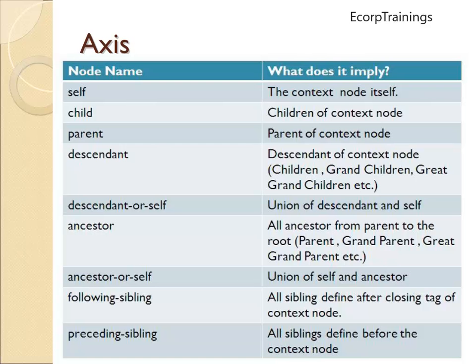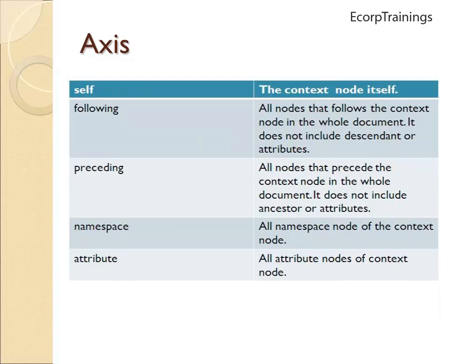The 13 axes are: self, child, parent, descendant, descendant-or-self, ancestor, ancestor-or-self, following sibling, preceding sibling, following, preceding, namespace, and attribute.